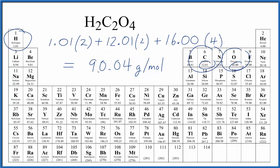This number means that if you have 90.04 grams of H2C2O4, oxalic acid, that's going to be one mole. If you have one mole of oxalic acid, it'll have a mass of 90.04 grams.